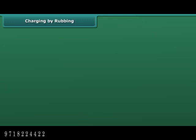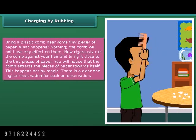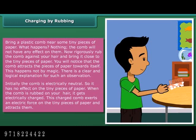Bring a plastic comb near some tiny pieces of paper — nothing happens. The comb will not have any effect on them. Now, vigorously rub the comb against your hair and bring it close to the tiny pieces of paper. You will notice that the comb attracts the pieces of paper towards itself. Initially, the comb is electrically neutral, so it has no effect. When rubbed on hair, it gets electrically charged and exerts an electric force on the paper.